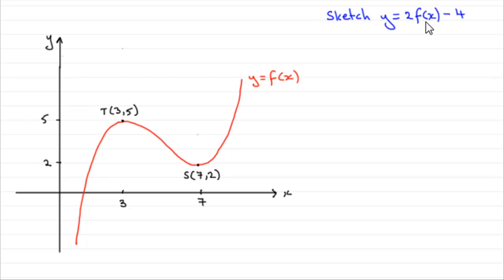Well, first of all then, if you do 2 times f of x, what that represents is a stretch, scale factor 2 parallel to the y axis, with any points on the x axis remaining invariant. So basically, what that means is that this point here stays put, but this point will move by a scale factor of 2 parallel to the y axis. So it's 3 units in from the y axis, but 5 units up, so that's going to go to 3, 10.